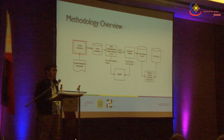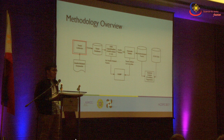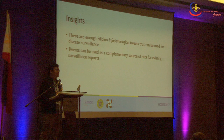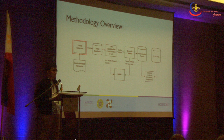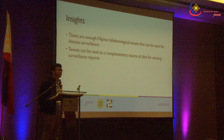This is the syndromic surveillance aspect of Project FASTER. After collecting data and identifying tweets usable for infodemiology, we prototype possible use cases. Using simple linear regression, we tried to correlate Twitter data with disease incidence data. The question we're answering is: can this be used as a complementary data source for existing surveillance? We used the Western Visayas region and found there is a discrepancy in the way surveillance is done in the Philippines — it takes too long. Maybe it's time for the Philippines to use other data sources such as social media.